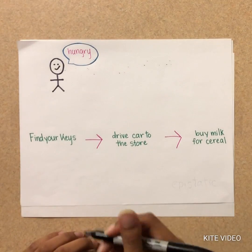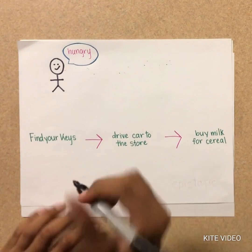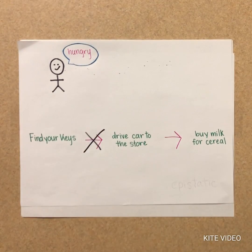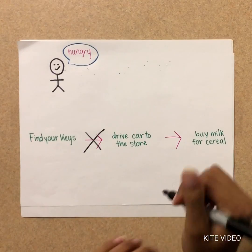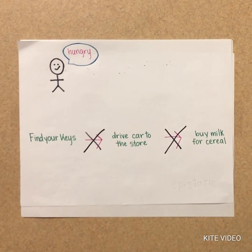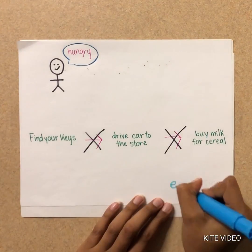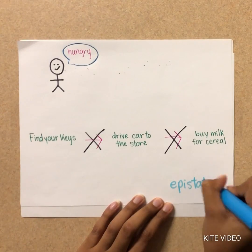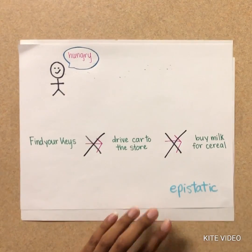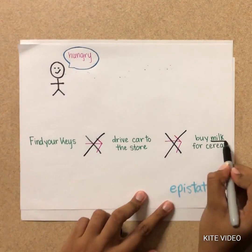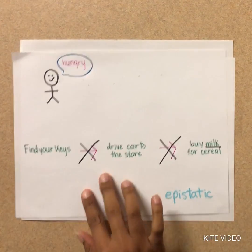Think of having milk as the final phenotype. But let's say you can't find your keys — then you can't drive your car to the store. Or what if you found your keys but you have a flat tire? Well, you also can't drive to the store. These factors are epistatic to each other. A mutation in one of these steps can mask or modify the phenotype, which is having milk.